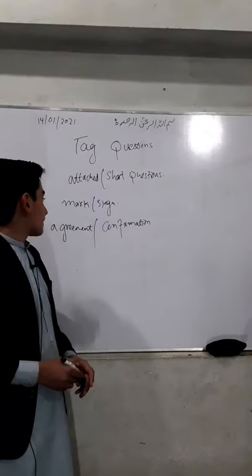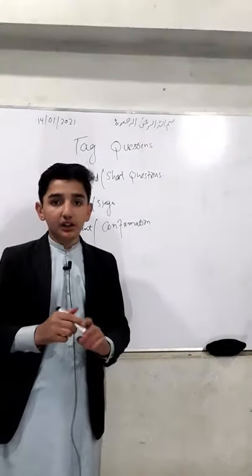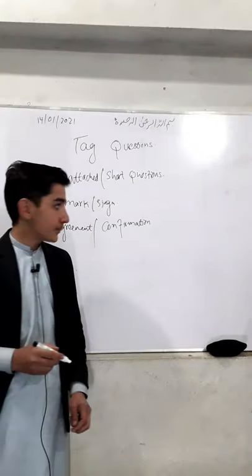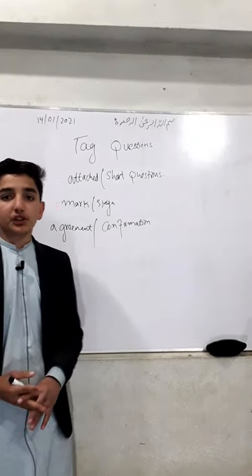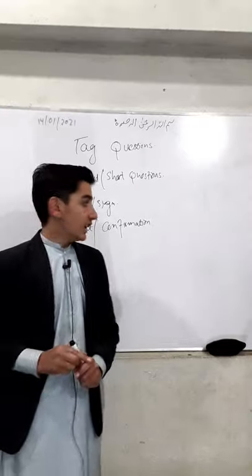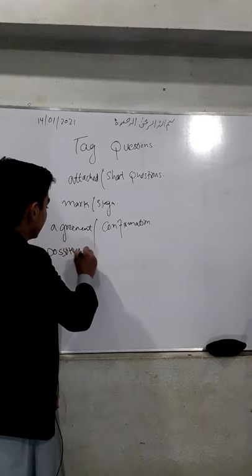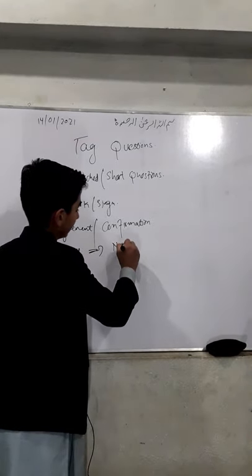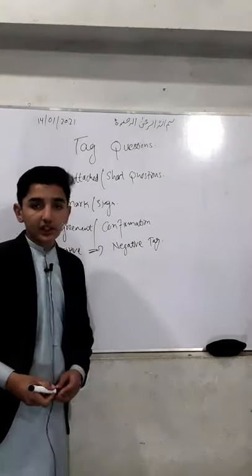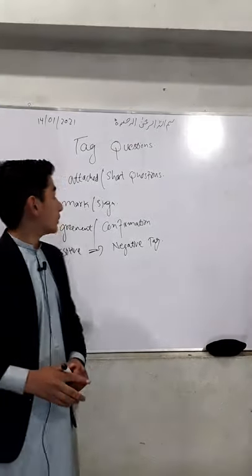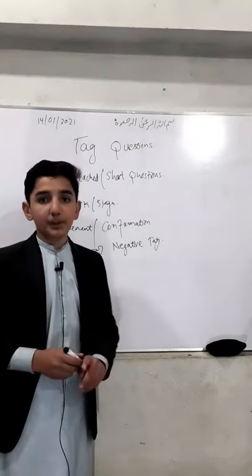Tag questions are used to show agreement or confirmation, to make sure whether the action is true or not. We have two structures in tag questions. The first structure is that positive sentences have negative tag, and negative sentences have positive tag.